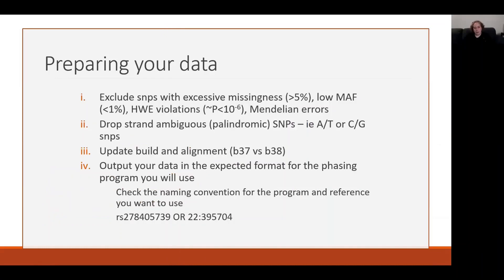The main points are that we need to QC the data well: exclude SNPs with excessive missingness, low minor allele frequency, Hardy-Weinberg issues, and Mendelian errors. We should also drop strand-ambiguous or palindromic SNPs. You need to be careful that your data is on the right build and alignment — if you've chosen the TopMed reference you need data on build 38; if you've chosen the others, the build needs to be build 37. You also need to output your data in the format expected for the phasing program, and it's really important to check the naming convention for the references and the program — do the SNPs use RS numbers or are they in a position-based format?